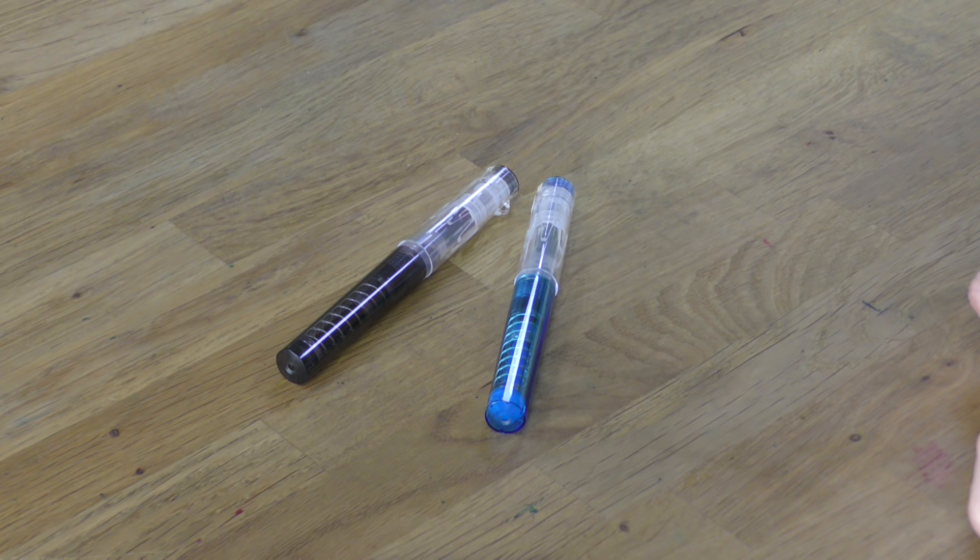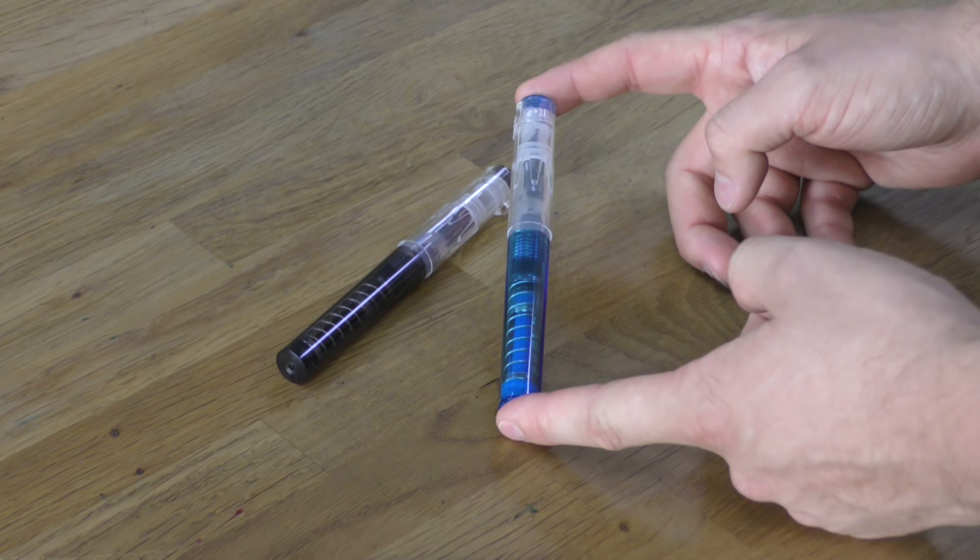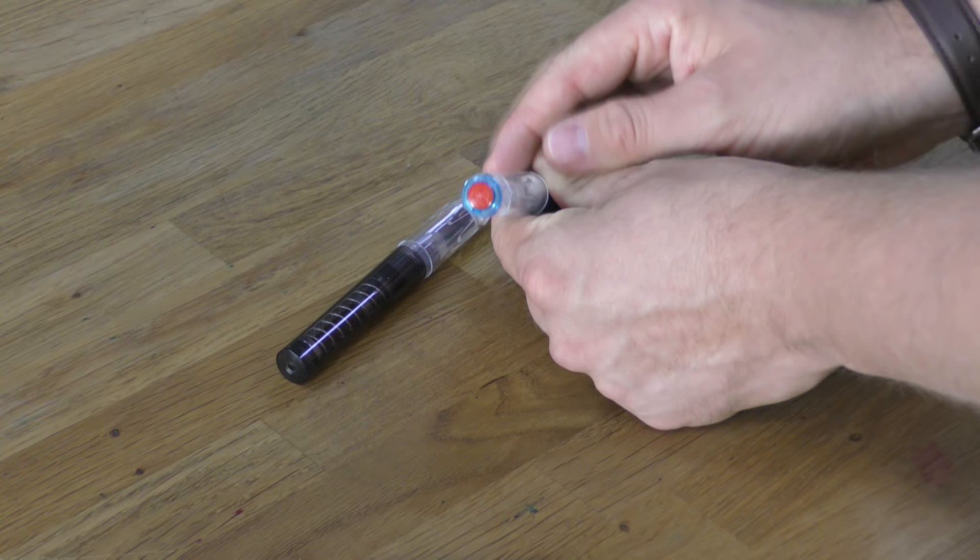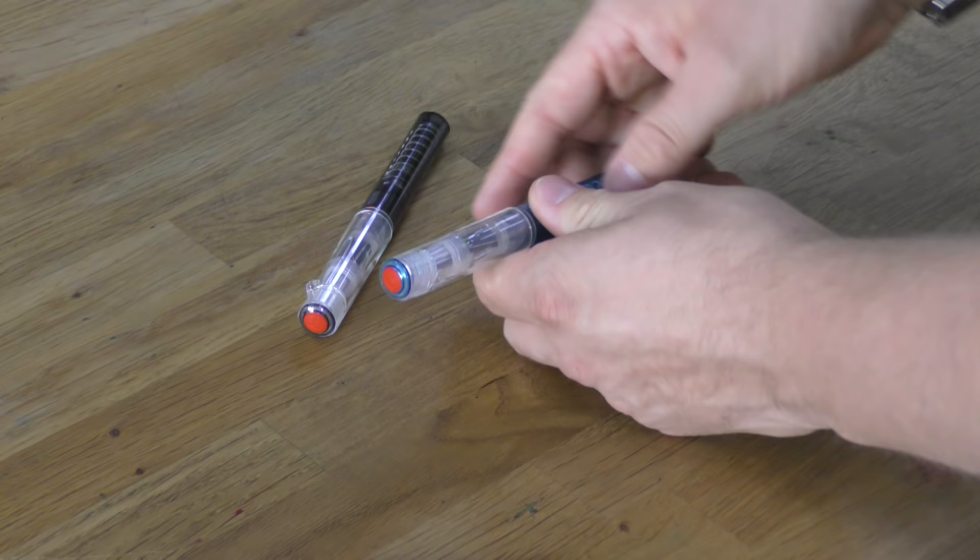So here you can see the two colours that the TWSBI GO is available in at launch. Sapphire, which is the blue one, and then smoke, which is the grey one. You can see that even though it's tinted with colour, it is transparent so you can see the mechanism inside. The lid is completely transparent too, with just a little coloured end that matches the rest of the pen with the TWSBI logo in red on it.